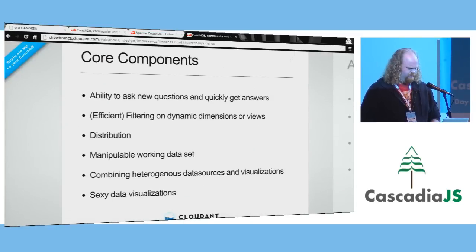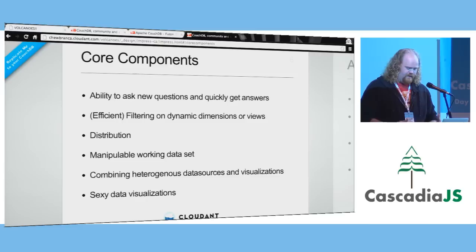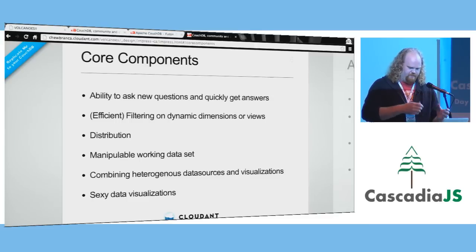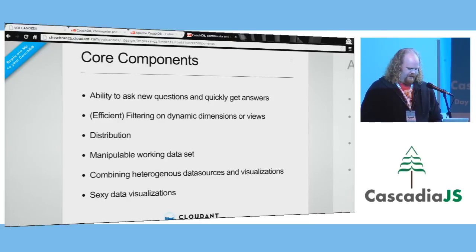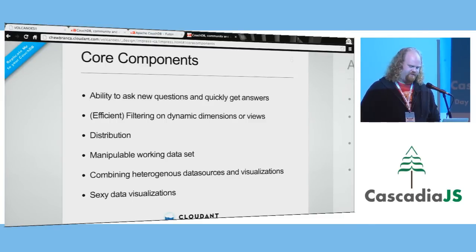The first core component is being able to ask new questions and quickly get answers. The lower the latency between questions and getting answers, the more interactive. You need to filter on multiple dimensions of the data — how does this particular set relate to that other set? You need to distribute it to your users, manipulate the data, change its form. And you need to take different types of data, put them in one place, and visualize them together. I always need sexy data visualizations too.